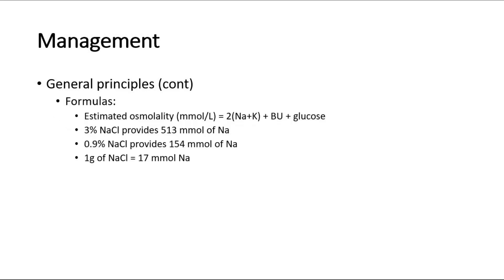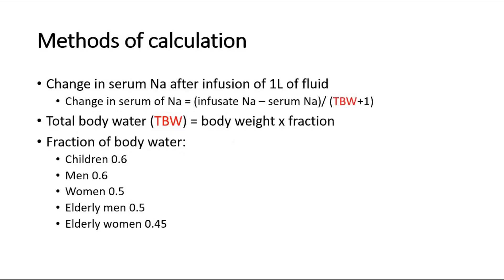This is the formula to calculate estimated osmolality. 3% sodium chloride provides 513 millimole of sodium. 0.9% sodium chloride provides 154 millimole of sodium. This slide shows how to calculate how much sodium to give.